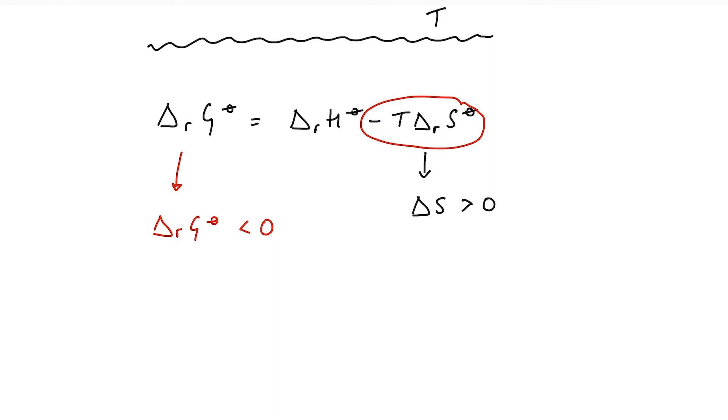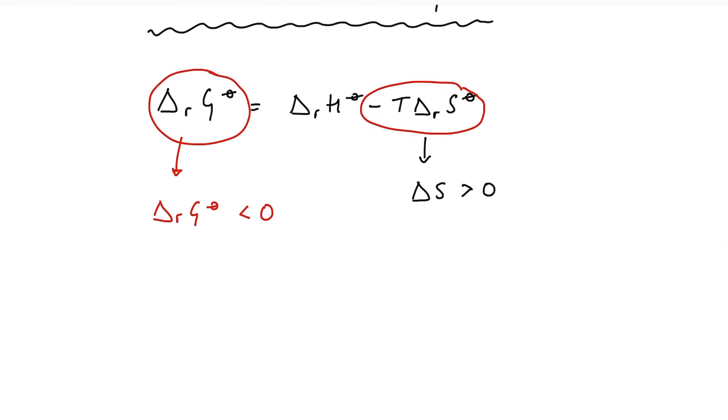what is far more useful for us in terms of thinking about redox reactions is this value of delta G or Gibbs energy doesn't just tell us whether a process is spontaneous, but it also tells us the maximum amount of work that our system can do. Because the maximum amount of work that the system can do is the result of the energy that's released as heat. And if we've got a positive change in entropy, energy is essentially drawn from the surroundings, which is also available for work.